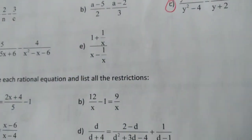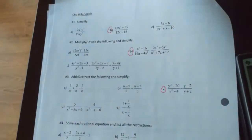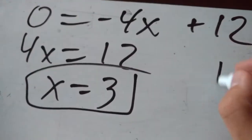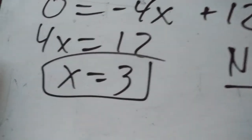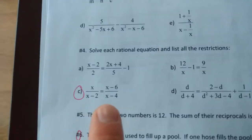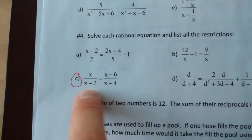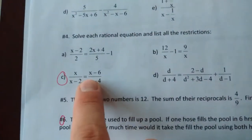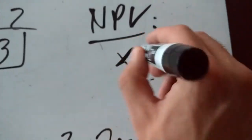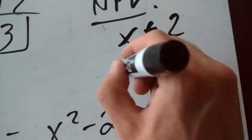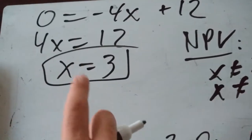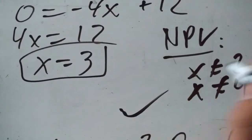We have now solved the original problem: x equals 3. But we have to list all of our restrictions. Looking back at what we started with, our non-permissible values are x cannot equal 2 — because that makes the denominator zero — and x cannot equal 4. The good news is our answer of x equals 3 is neither of those numbers, so we are good.